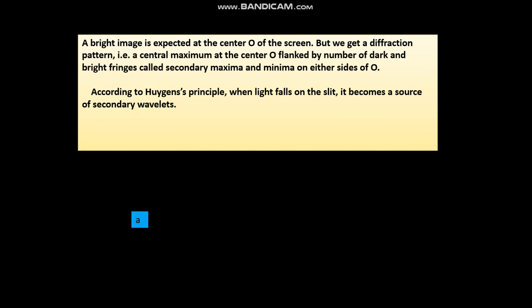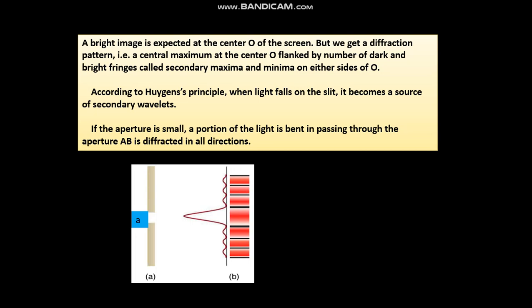So according to Huygens principle, when light falls on the slit, it becomes a source of secondary wavelets. If the aperture is small, a portion of light is bent passing through the aperture AB and is diffracted in all directions as we have seen earlier.